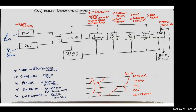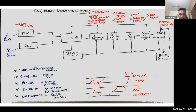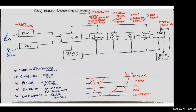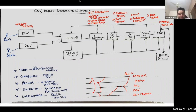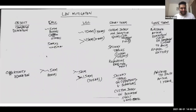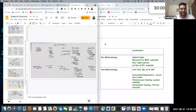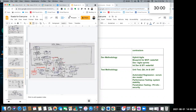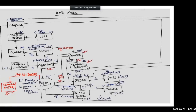The judges discuss briefly before starting questioning. One judge asks Mohit to go to the data model and explain how campaign influence is calculated, especially considering the B2C customers.